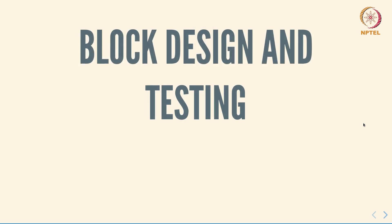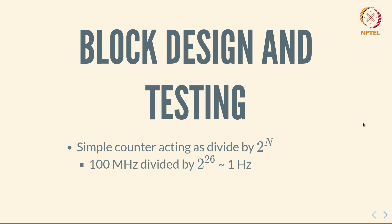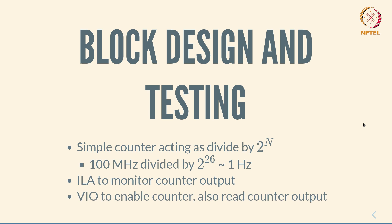In this demo we will create a simple counter-based block design which will act as a divide-by-2-power-N counter. If you take a 100 megahertz clock and divide it by roughly 2 to the power 26, you get approximately a 1 Hz signal and you should be able to see that blinking on an LED. We will also connect ILAs and VIOs to monitor the counter output and use the VIO to enable the counter.